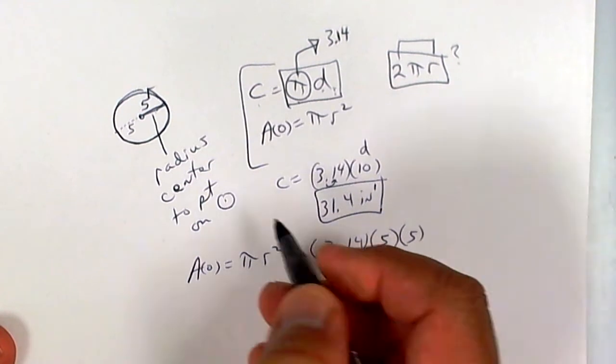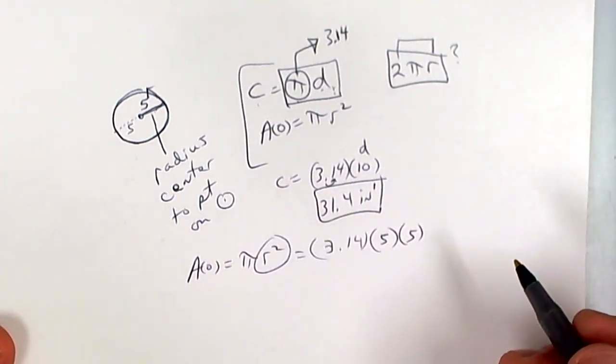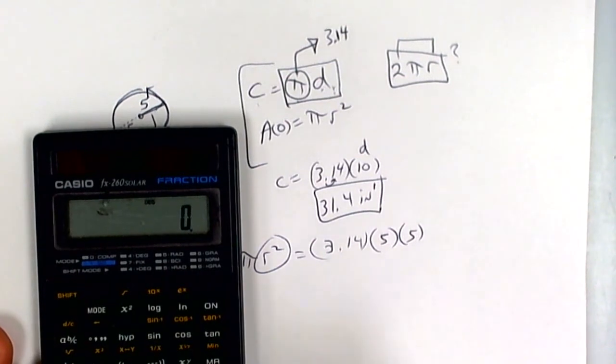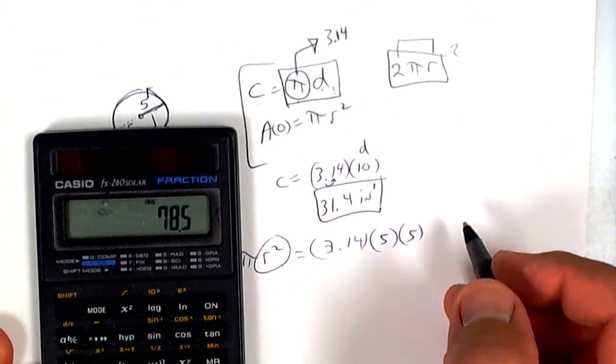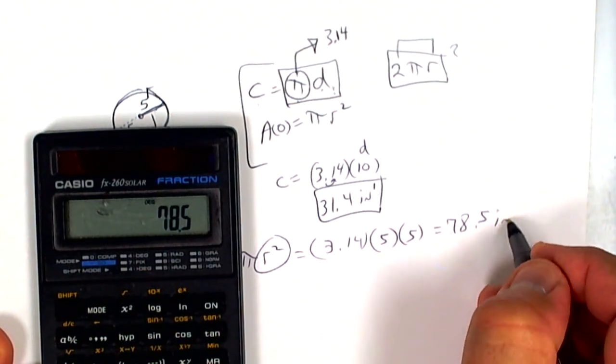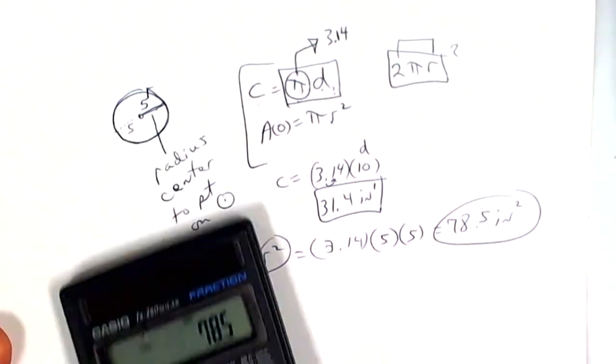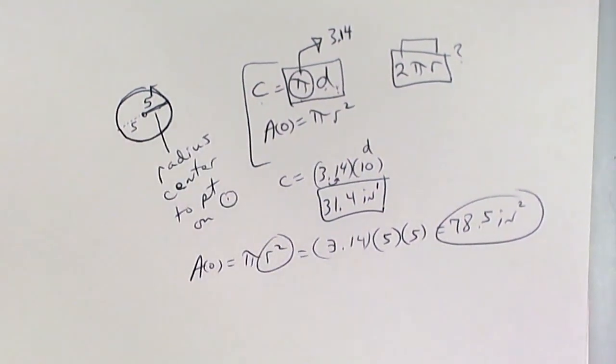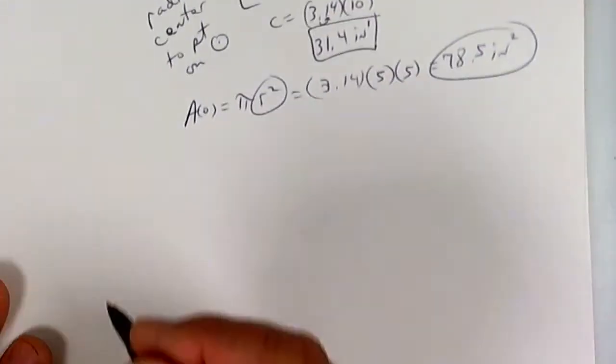Area of a circle is pi radius squared. Pi is 3.14, the radius is 5, so it's going to be 5 times 5 because it's radius squared. Don't put 10—10 wouldn't be right. So it's 25 times 3.14. 25 times 3.14 equals 78.5, and that is the area. It would be square inches. So we did circumference and we did area. Now it's your turn. Don't cry.